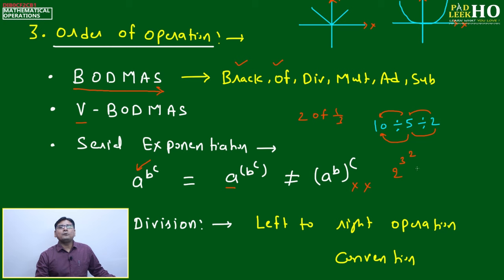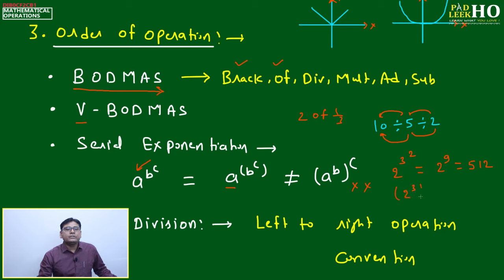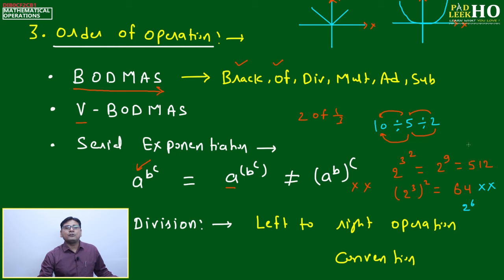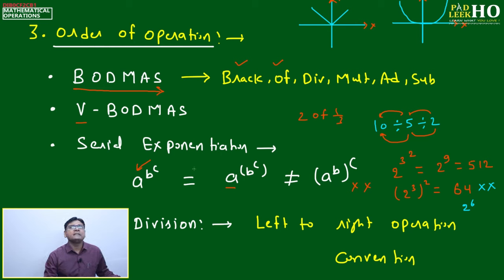Continuing the example: 2^(3^2) = 2^9 = 512. If you incorrectly do (2^3)^2 = 8² = 64, that is wrong. The difference between 64 and 512 is huge — 64 is 2^6 and 512 is 2^9. Doing it the wrong way leads to a completely wrong answer. Serial exponentiation always goes top to bottom.